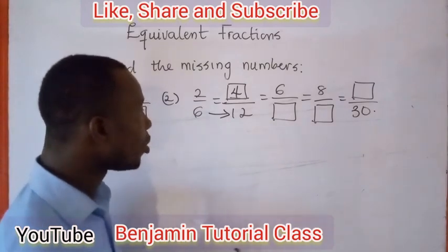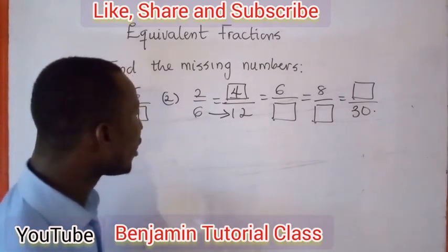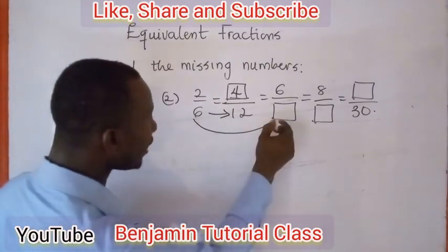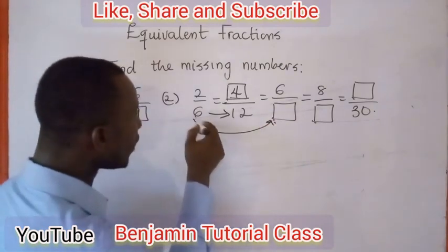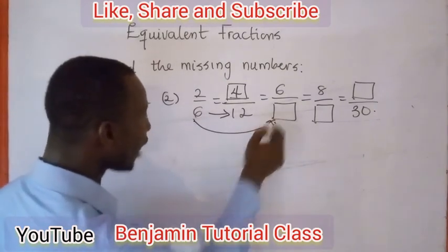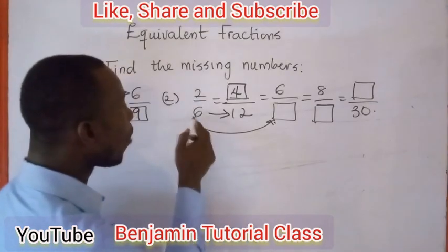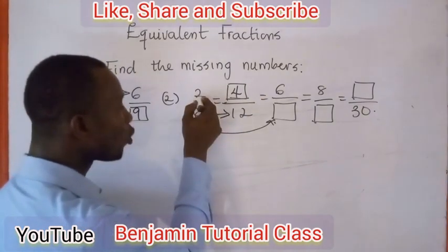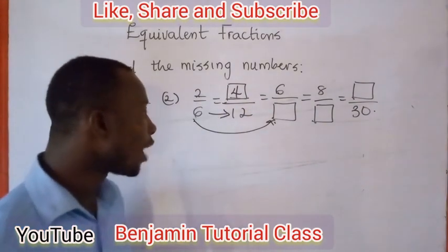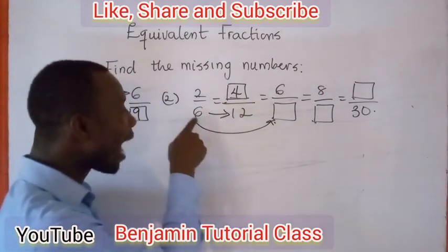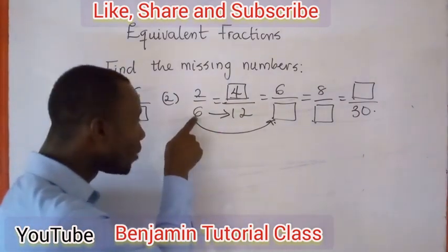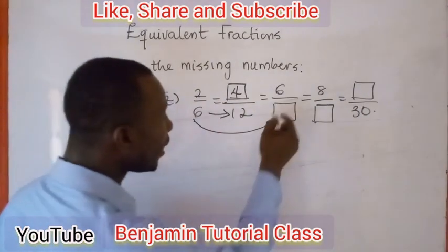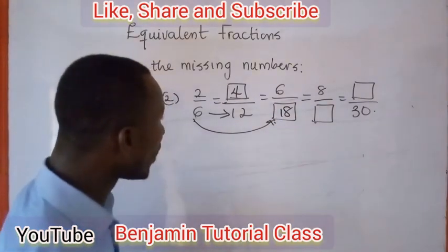Now there is also a link between the numerator 6 and the numerator 2 from 2 over 6. You say 6 divided by 2, which gives 3. You then multiply the answer by the denominator: 3 multiplied by 6 gives 18. So 6 over 18 is confirmed.